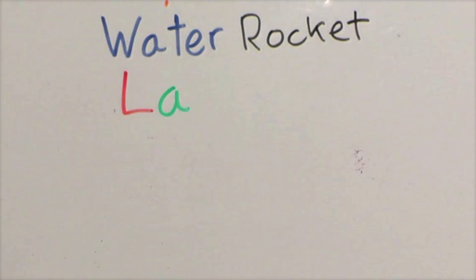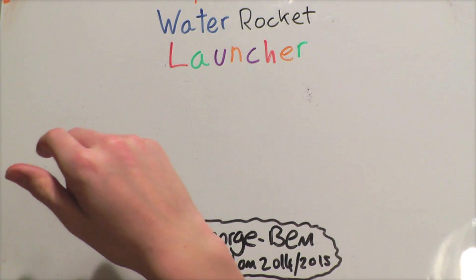A water rocket is a rocket propelled by water, and a water rocket launcher is something which guides the rocket up into the air.